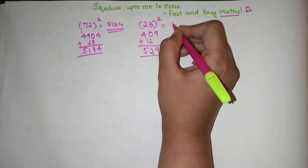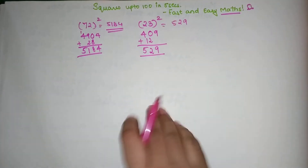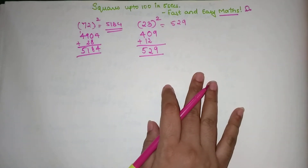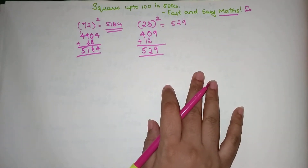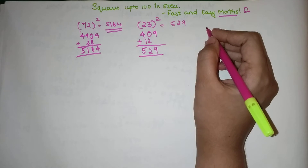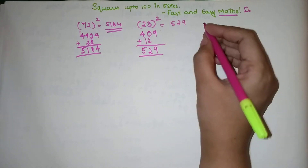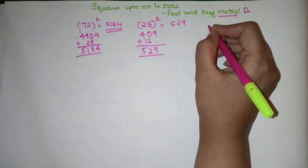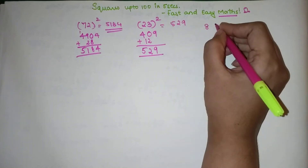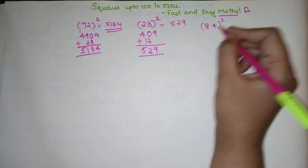So your answer is 529. If you have any doubts, pick up your calculators and check your answers. Now let's see what happens when you take the number 84.